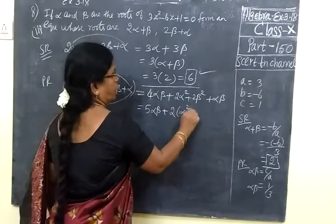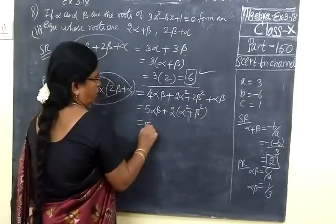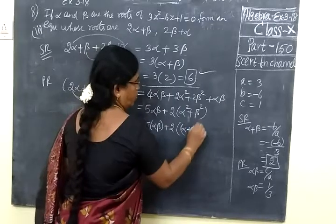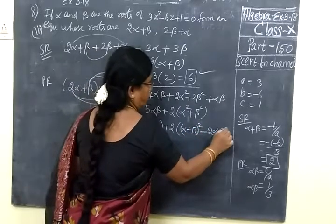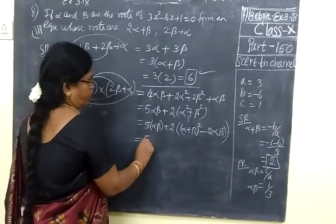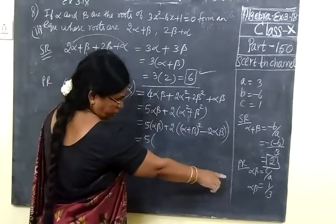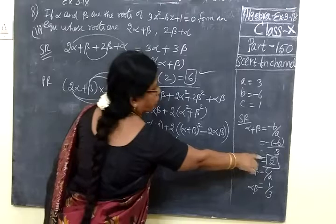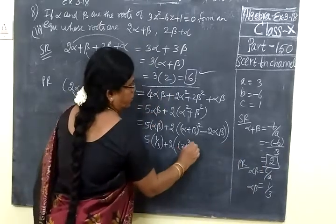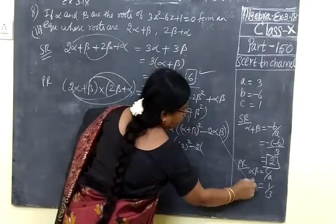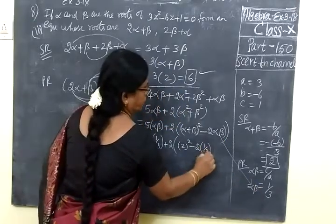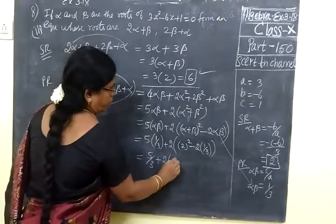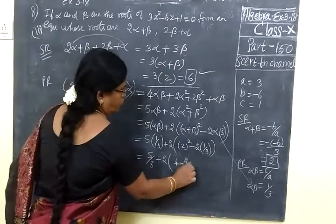Write alpha squared plus beta squared. Alpha squared plus beta squared, we know the formula: (alpha plus beta) whole square minus 2 alpha beta. Equal to 5 bracket, alpha beta 1 by 3, plus 2 bracket, alpha plus beta 2 square minus 2 times alpha beta 1 by 3. Equal to 5 by 3 plus 2 bracket, 4 minus 2 by 3.